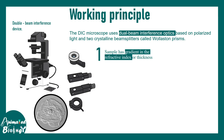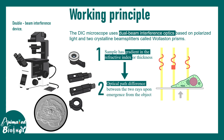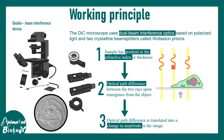The overall working principle is very simple. The sample should have a gradient of refractive index and different thickness. These differences in thickness and refractive index would eventually be translated into differences in terms of brightness and contrast. Light passing through the cell in different locations would encounter different organelles with different refractive indexes, leading to retardation of certain waves. The principle which forms the contrast is the optical path difference, which is translated into a change in amplitude in the image.